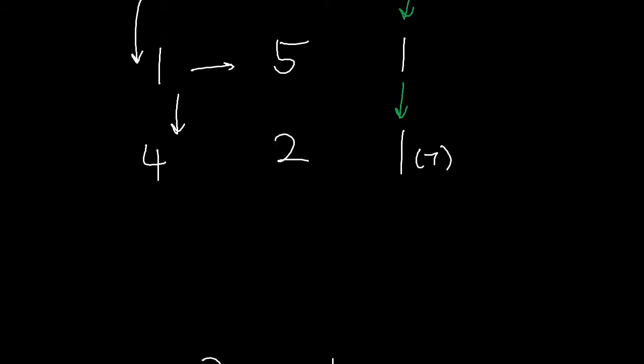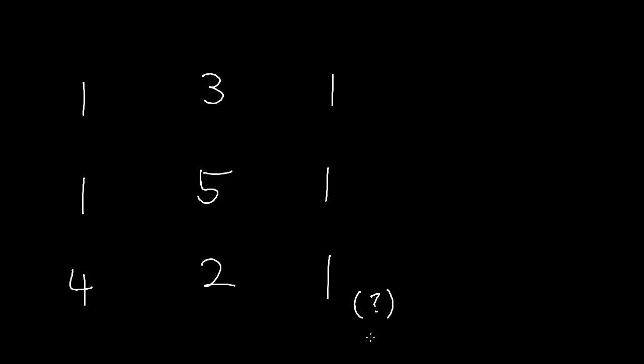Instead, we have to ask ourselves a different question. How do we find the minimum path to get to here, where this is the value of seven? Well, there's only two ways to reach this node. You either came from the top, or you came from the left.